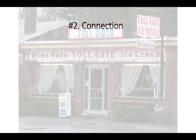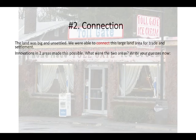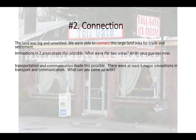Tollgate — I don't know if anybody's familiar with Tollgate Restaurant, but that connects to this unit. That land we had just expanded into was big and unsettled. We were able to connect this large land area for trade and settlement. There were two areas where we had innovations that made this possible. Transportation and communication — there are at least six major innovations in both areas together. What can you come up with?